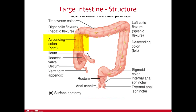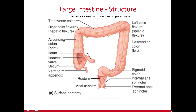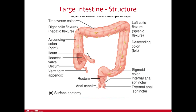Moving up the right side from the cecum, we have the ascending colon, which extends upward until just under the liver. There it turns at what's called a flexure — a bend — called the hepatic flexure, or colic flexure. The colon then becomes the transverse colon, going across the upper abdomen, before making a downward turn at the left colic flexure, also called the splenic flexure because it's near the spleen.